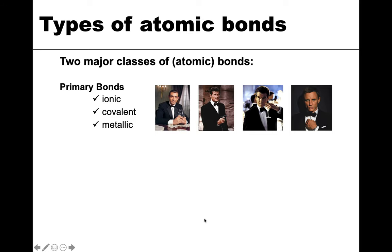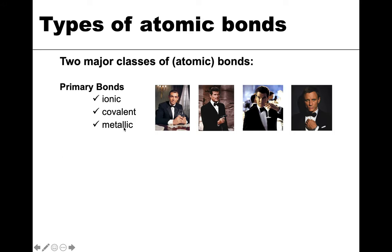There are two main classes of bonds. The first type is primary. Primary bonds are the strong bonds — they have much higher bond energy than the other type. So we have ionic, covalent, and metallic — hopefully you've at least heard of two of those.